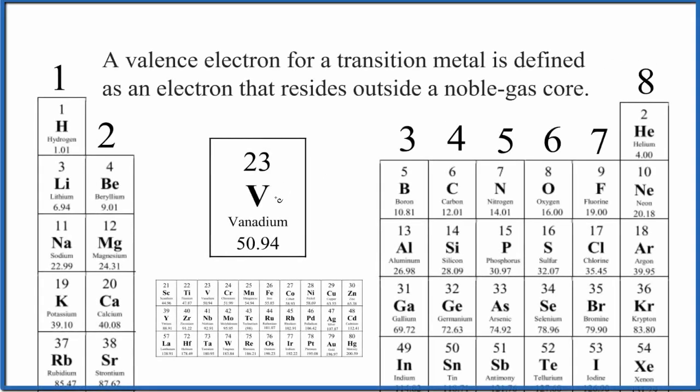Let's take a look at the number of valence electrons for vanadium, the transition metal vanadium. So it's useful when we look at the periodic table here.